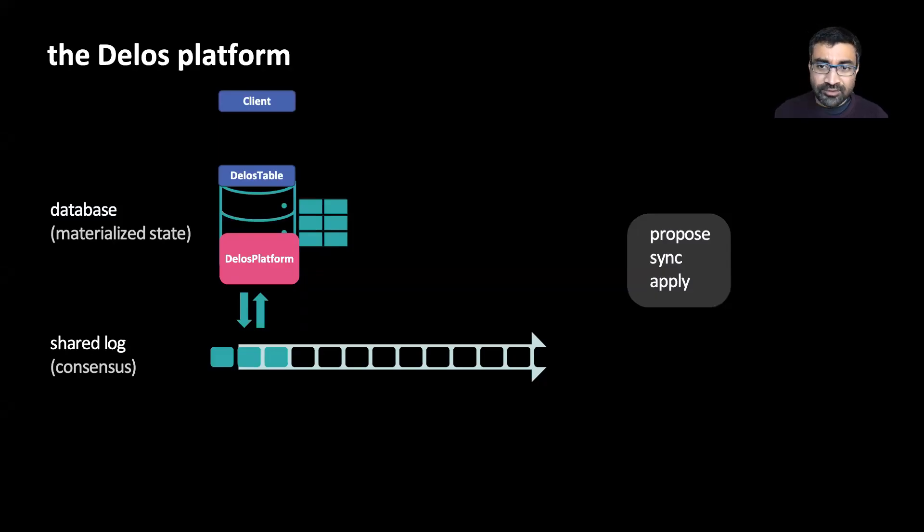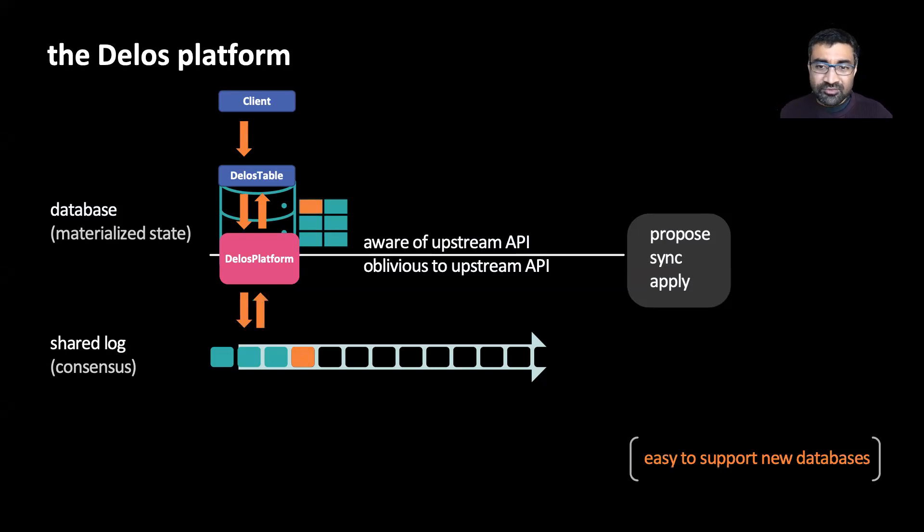To understand how this works, let's look at the behavior of a single node. When a client of Delos table sends a write to it, it turns around and proposes a new command describing the update to the platform layer. The platform then appends the update to the underlying shared log and then plays the log forward and relays the update back to Delos table, which in turn writes the update to local storage.